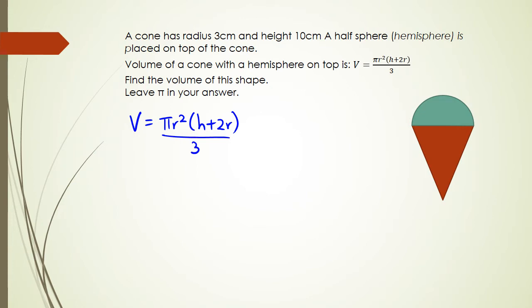We're asked to find the volume of this shape. If you have a look at it, the first thing is that the height is 10 centimeters, so h = 10. Next, the radius equals 3, so r = 3.